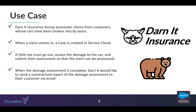Darnit Insurance is already a Service Cloud customer. When a case is created, a field rep needs to go out and assess the damage to the car — figure out to what degree it's been damaged so the claim can be processed properly. When the damage assessment is complete, they'll close out the case and also send a summarized report of the damage assessment to the customer as a neat service report via email.